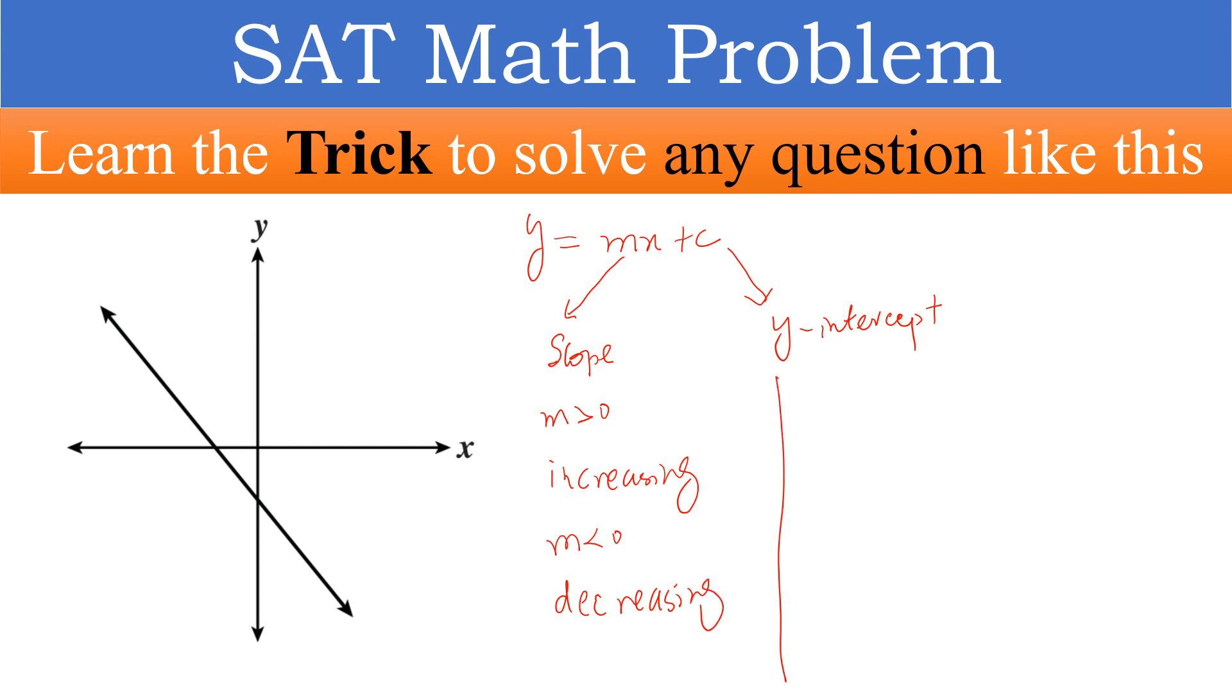Here, if y-intercept c is greater than 0, it means the line is above the origin. If c is less than 0, it means the line is below the origin. Origin is 0, 0.